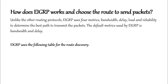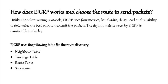EIGRP uses the following tables for route discovery: the neighbor table, topology table, routing table, successors, and the feasible successor. Now let's find out how each of these tables works one by one.